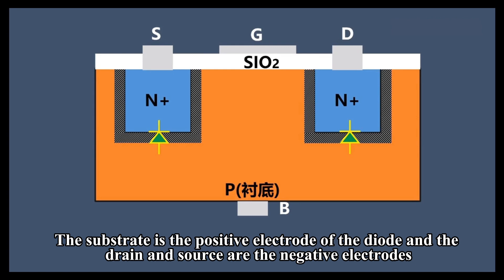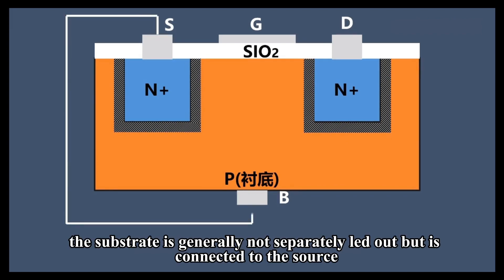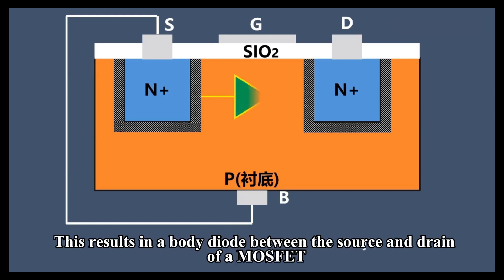The substrate is the positive electrode of the diode and the drain and source are the negative electrodes. For a single MOSFET, the substrate is generally not separately let out but is connected to the source. This results in a body diode between the source and drain of a MOSFET.